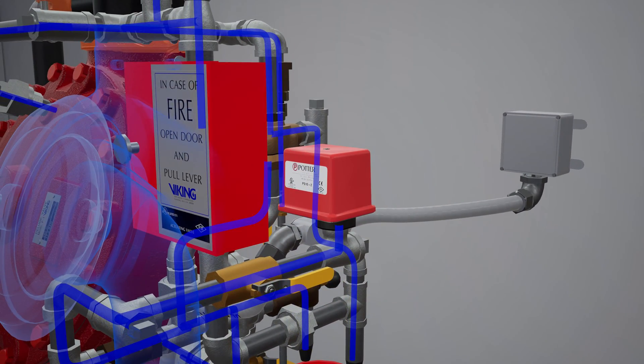Simultaneously, water will also fill the trim leading to the water flow alarm causing it to activate, alerting its connected monitoring device such as the security panel or fire alarm panel.